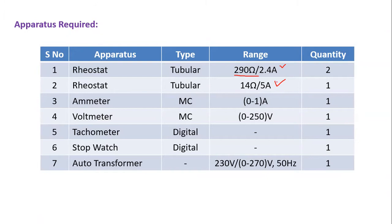The next rheostat is used in the motor armature circuit to limit the starting current. At the moment of starting, this rheostat will be in the maximum resistance position; once the motor starts, we slowly reduce and remove the resistance. An ammeter is used to measure the generator field current, and another ammeter is connected across the armature to measure the generated EMF. A tachometer is used to measure the speed.